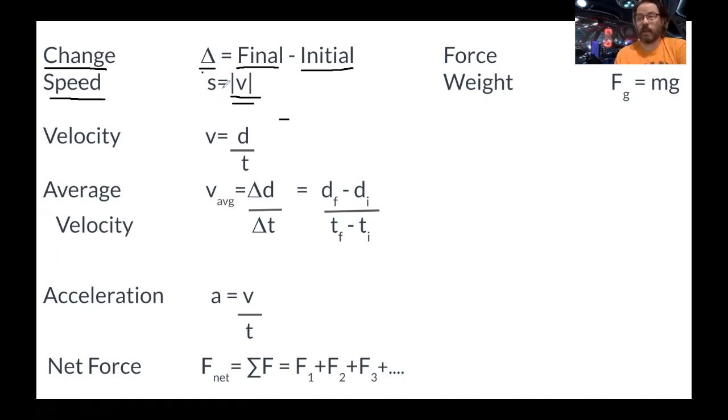But speed, there is no direction, so there is no negative. So we put the absolute value around it for speed. So velocity is how much distance changes over time. And when we look at instantaneous velocity, we just look at what's the distance, what's the time.